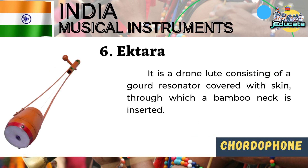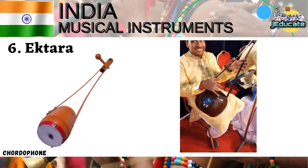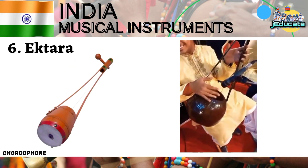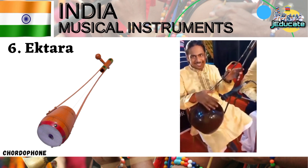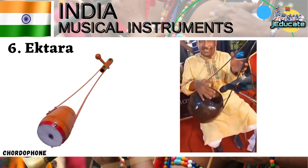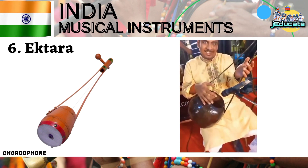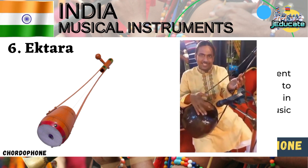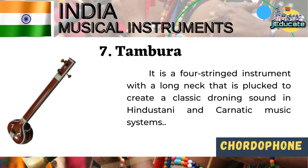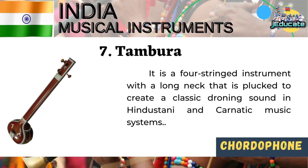Number 6, Ektara — it is a drone lute consisting of a gourd resonator covered with skin, through which a bamboo neck is inserted. Number 7, Tambora — it is a four-stringed instrument with a long neck that is plucked to create a classic droning sound in both Hindustani and Carnatic music systems.